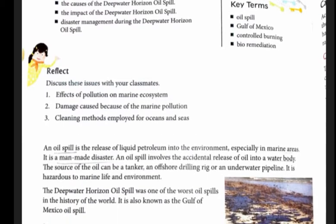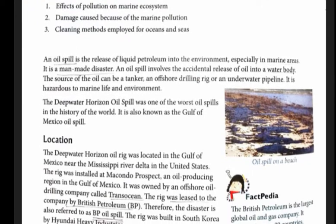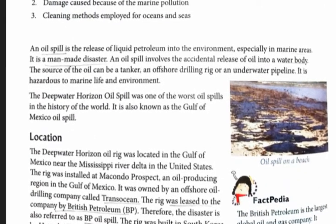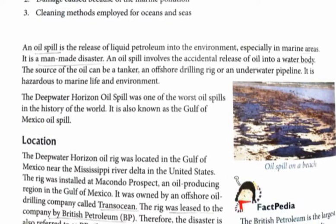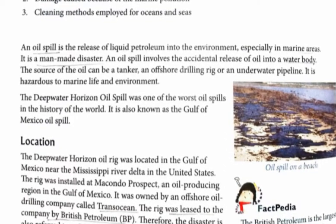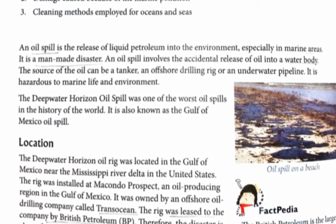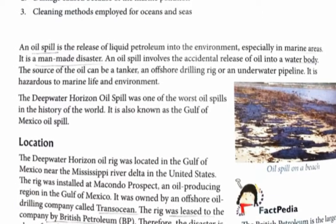Deepwater Horizon Oil Spill. What is the oil spill? An oil spill is the release of liquid petroleum into the environment, especially in marine areas — like the seas, gulf, coast, any kind of marine areas. It can be defined as the accidental release of liquid petroleum into the environment. It is a man-made disaster.